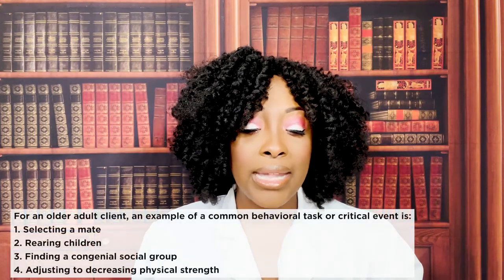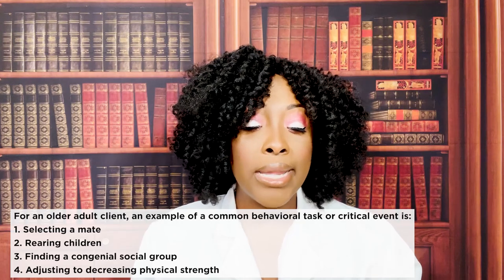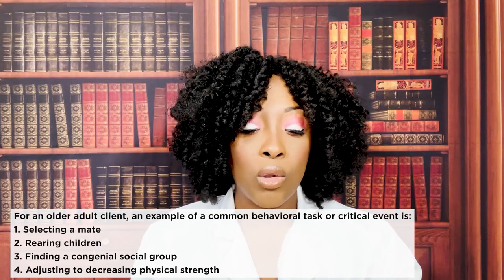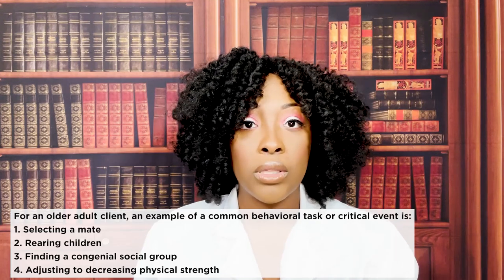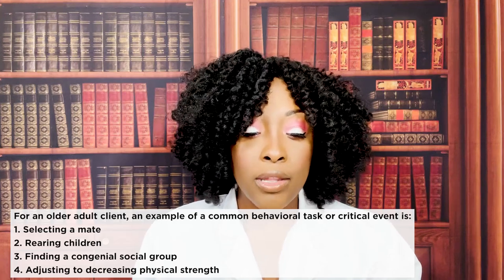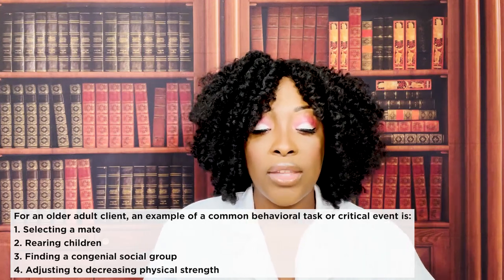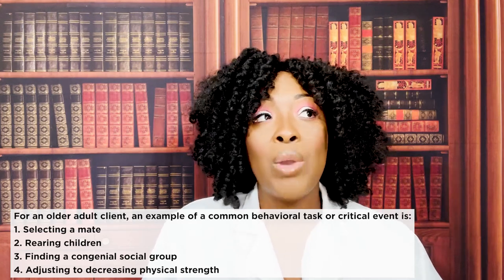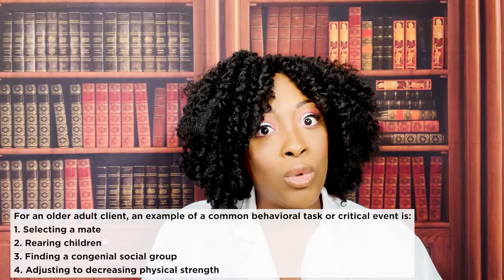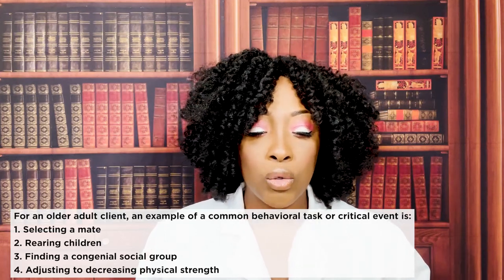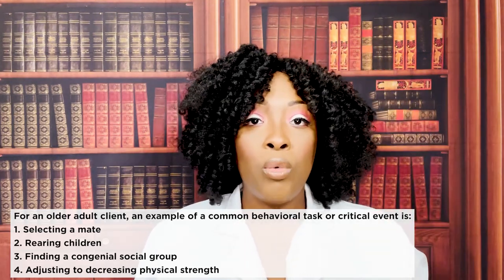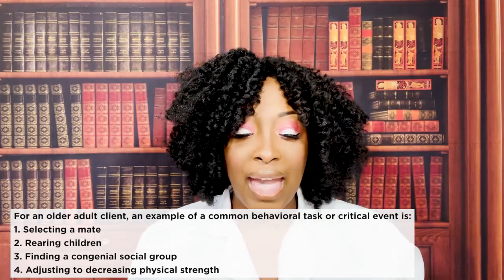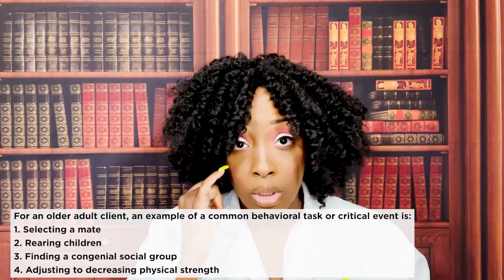For an older adult client, an example of a common behavioral task is one, selecting a mate; two, rearing children; three, finding a congenial social group; or four, adjusting to decreasing physical strength. The correct answer is four — they gave us a hint: older adult client. You have to come to terms that your body isn't what it used to be. Selecting a mate is early adulthood; rearing children is middle adulthood; finding a congenial social group is about middle to early adulthood.